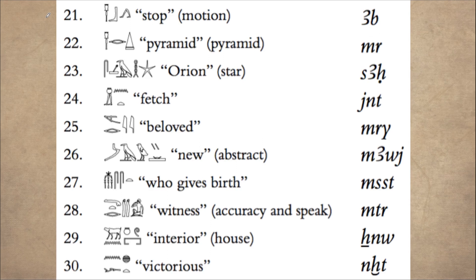Hello everybody and welcome to a new lesson of Learn Old Egyptian. Today we're going to review bi-literal hieroglyphics together. So let's start with the first word, number 21.